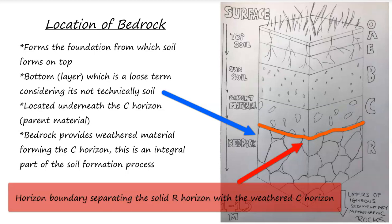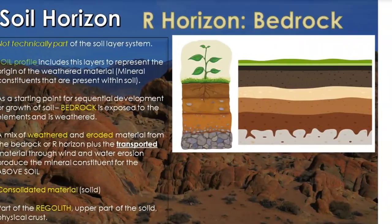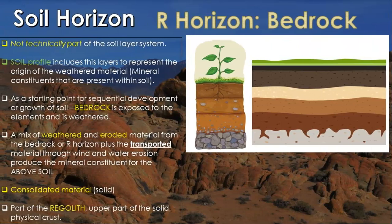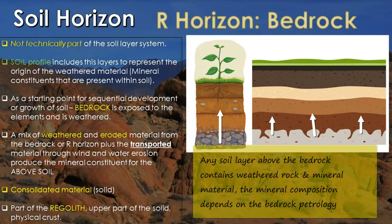Above the R horizon you have the C horizon, where you start to get an increase in organic material mixed in with the mineral component, along with air and water pore spaces. The C horizon is also called the parent material horizon. It is not technically part of the soil system, but it is that baseline layer always included in soil diagrams and profiles because it is essential — the soil sits on this solid consolidated material layer, which will be igneous, sedimentary, or metamorphic.